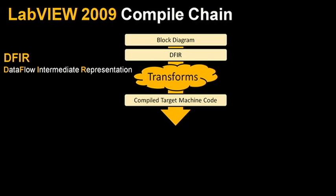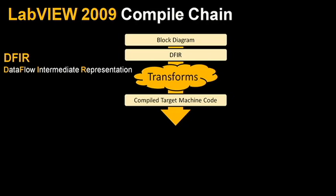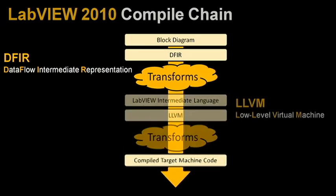LabVIEW 2010 introduces a second intermediate representation using LLVM. LLVM is a high-performance, open-source compiler infrastructure that is widely used in both academia and industry. It's been used at companies such as Apple, Adobe, and Google, for example. LLVM uses a very low-level intermediate representation and possesses knowledge of target machine characteristics such as SSE instructions. Essentially, we can make a whole host of new optimizations to your code, both standard and custom, in both LLVM and Defer that we couldn't make before.